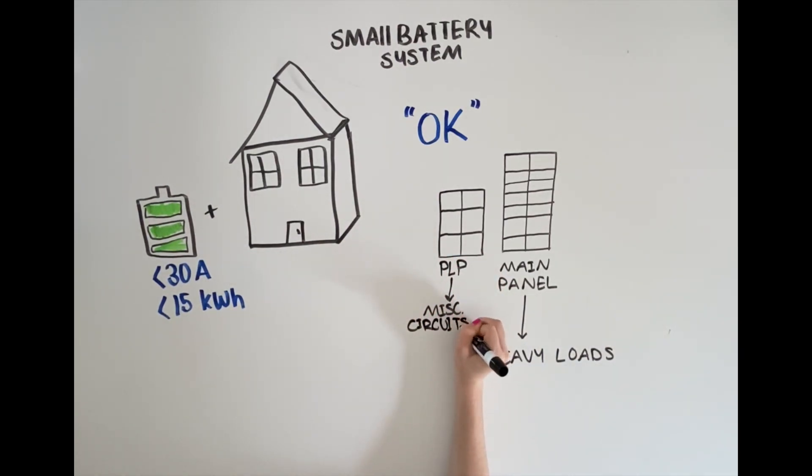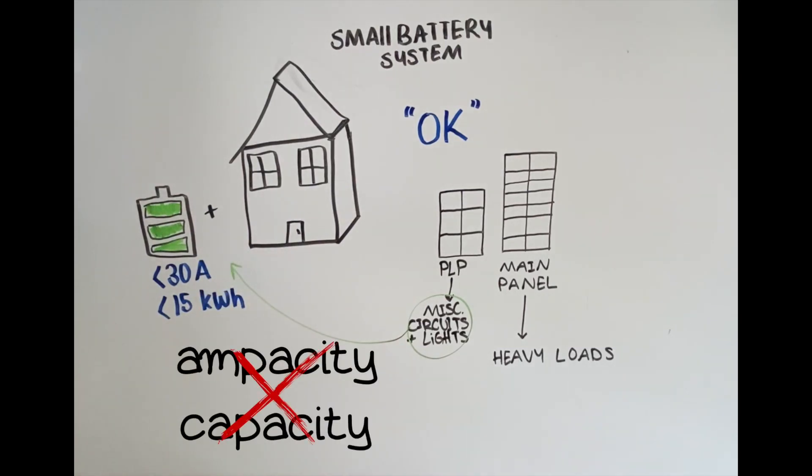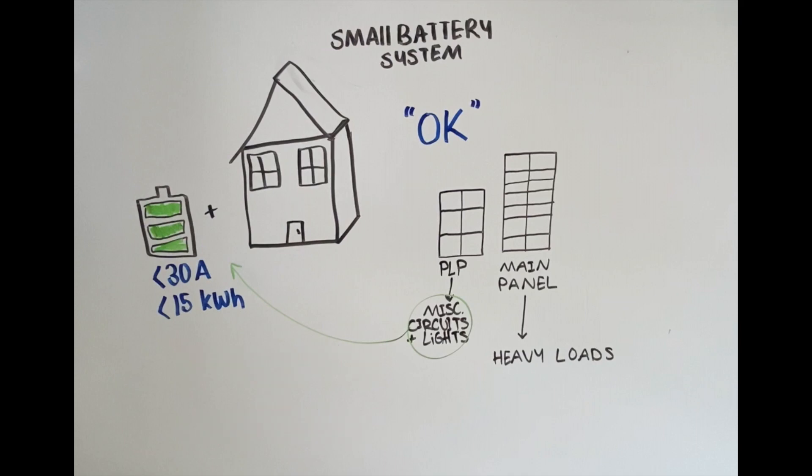and a protected loads panel, which has basically your miscellaneous circuits, lights, and maybe some refrigeration. And these are the circuits that end up getting backed up with the smaller battery, because it just doesn't have the ampacity, or the capacity, to power up the whole home.